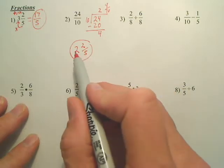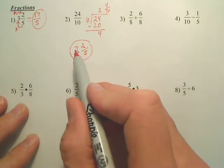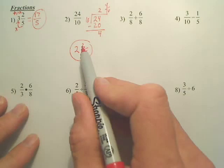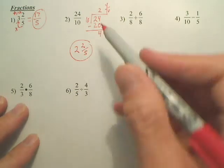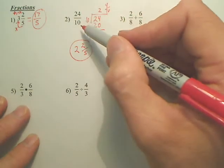Now what's 5 times 2? 10. 10 plus 2 is 12. Does 12 over 5, does 12 over 5 the same as 24 over 10? Yeah. Okay.